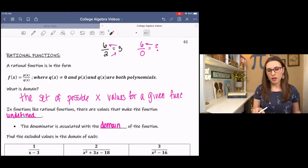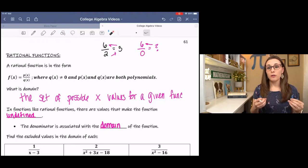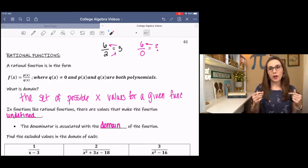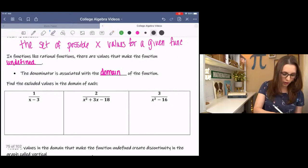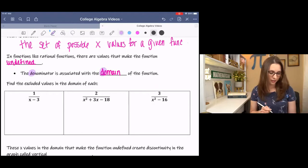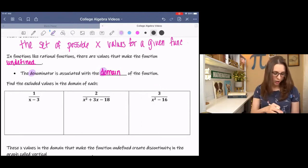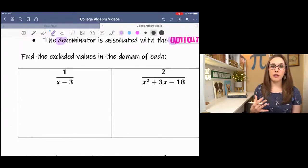And these undefined points in the graph when we're talking about x values are called vertical asymptotes. A vertical asymptote is an imaginary line where the function is undefined. And in order to find a vertical asymptote, we have to know about the domain. So I have a couple examples down here. And before I move on, I want to note that denominator is domain. D, D, get it?